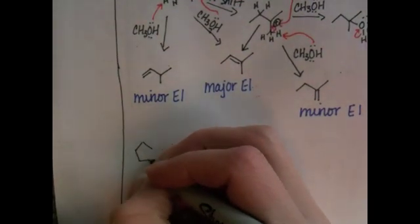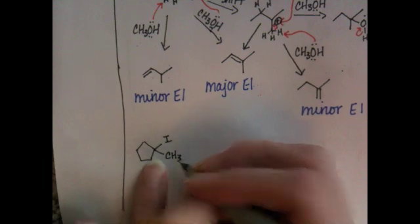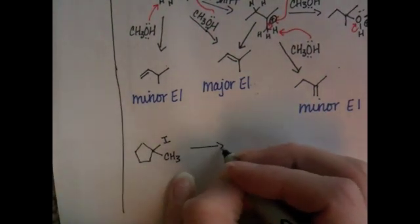Okay, so now we're going to have iodomethylcyclopentane, and we're going to react this with ethanol and heat.